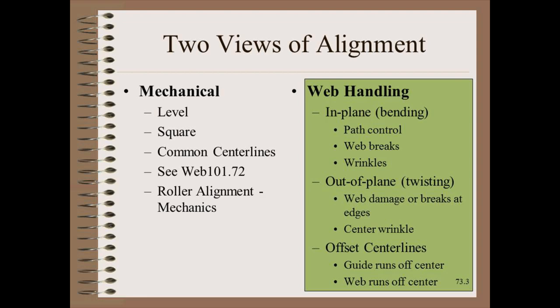There are two ways to view roller alignment. The first is the mechanics view of alignment, where we are concerned with how a maintenance department or contractor can measure roller positions and move rollers into alignment. They will be concerned with things like level and square and center lines. This mechanics view was the focus of the last module. The second way to view alignment is from the perspective of our customer — the web. The web views alignment in a very different way. The web does not care at all about level and square.